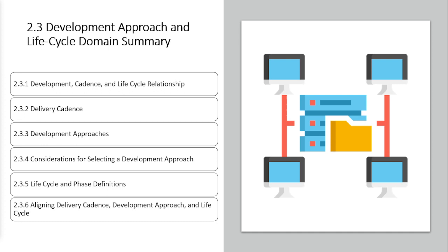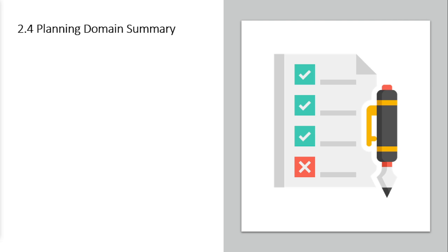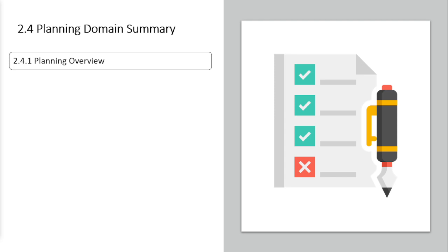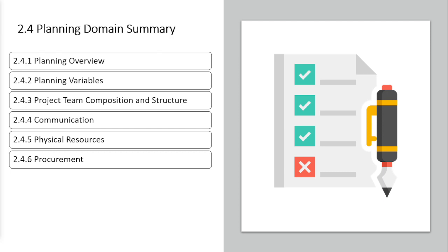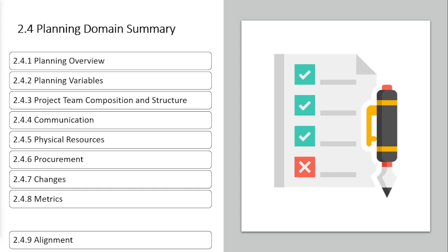Chapter four, the planning domain: there is so much to plan — schedule, scope, cost, quality, resources, communication, risk, procurement, and stakeholders. First, identify the planning variables. Plan project team composition and structure, communications, physical resources, procurements, changes, and metrics. Align all of these so that you have a streamlined project management plan.